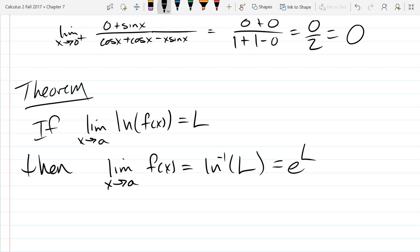So the reason I write ln inverse so often, instead of always just going e to the L, is just because it jogs your memory that the exponential function is the inverse natural log function.